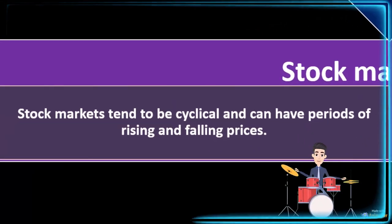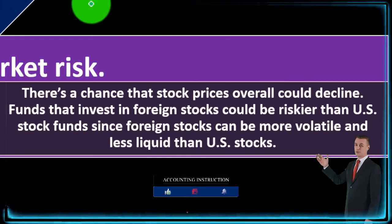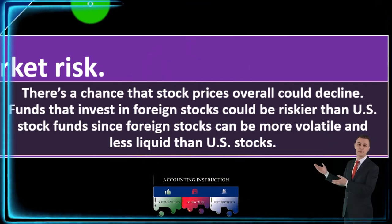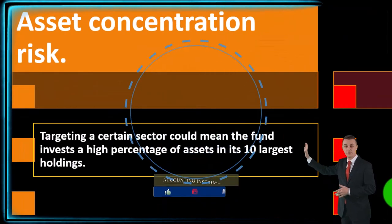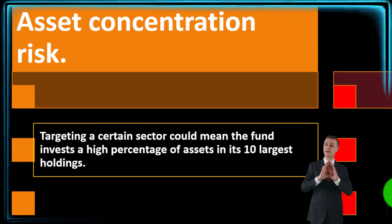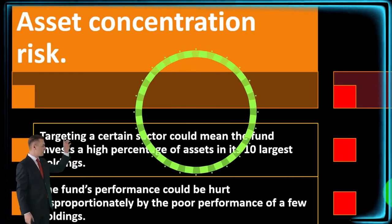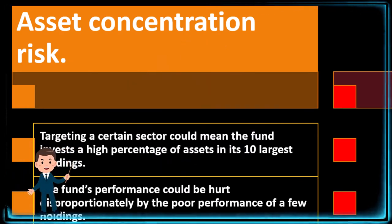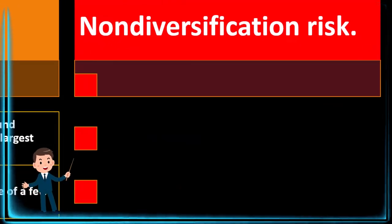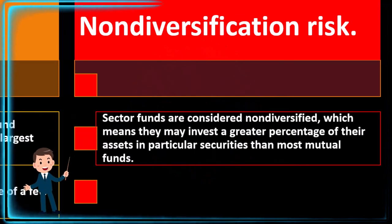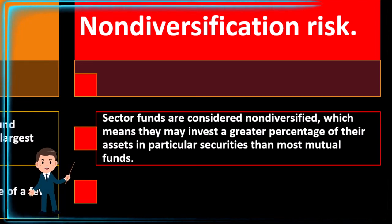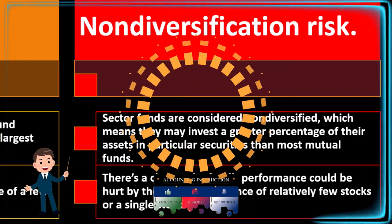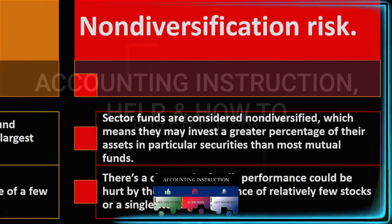Stock market risk: stock markets tend to be cyclical and can have periods of rising and falling prices, with a chance that stock prices overall could decline. Funds investing in foreign stocks could be riskier than US stock funds, since foreign stocks can be more volatile and less liquid. Asset concentration risk: targeting a certain sector could mean the fund invests a high percentage of assets in its 10 largest holdings, so the poor performance of just a few holdings could disproportionately hurt the fund's overall performance. Sector funds are considered non-diversified and may invest a greater percentage in particular securities than most mutual funds.